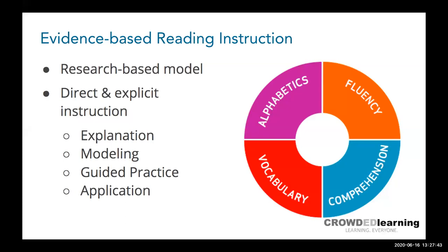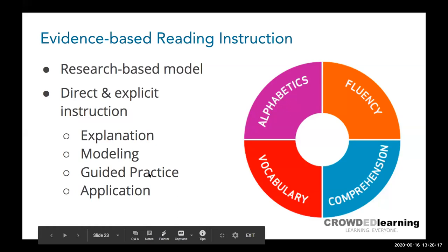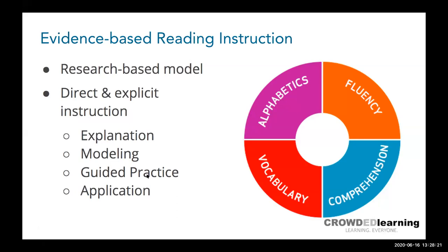Explicit instruction happens through explanation of what's happening, through modeling of what good reading looks like — not just reading and answering questions, but when you read a passage together, modeling questions like: what did I just read? Why did the author say that in this way? The sorts of questions that proficient readers ask need to be modeled for students. It also involves guided practice and lots and lots of application of reading.